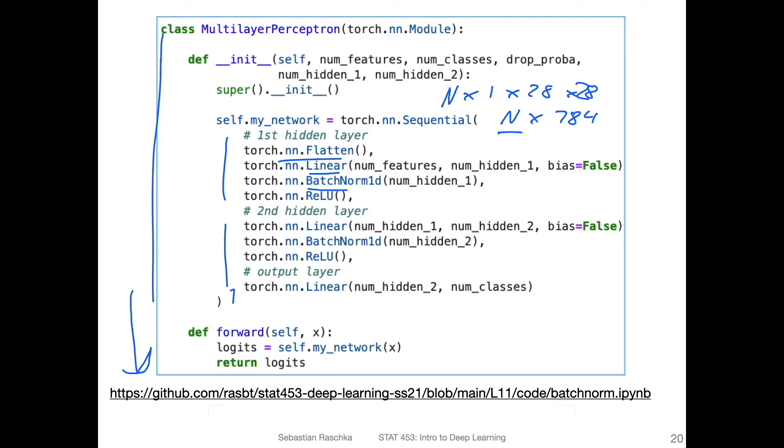I insert batch norm after the linear layer. Notice that there's a 1d, which may be confusing. Why is there a 1d? That's because there is a slightly different version of batch norm for convolutional networks. We will discuss this in the convolutional network lecture where this would be called batch norm 2d. So to keep them apart, this is called batch norm 1d. This is essentially just the batch norm that we discussed in the previous videos. The 1d is just to keep them apart. I'm doing the same thing in the second hidden layer.